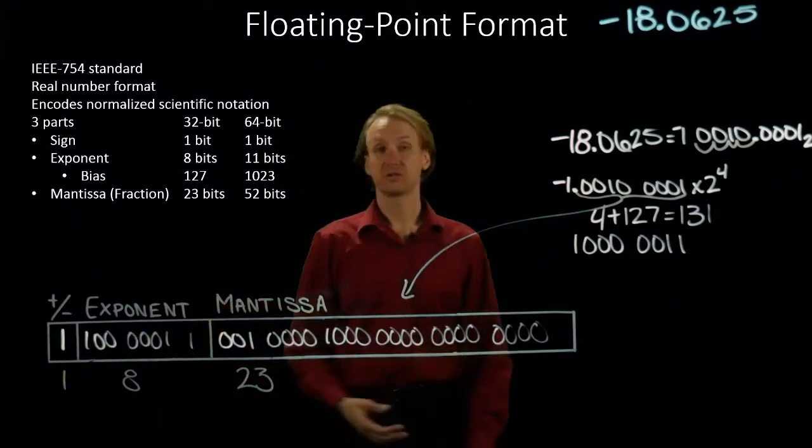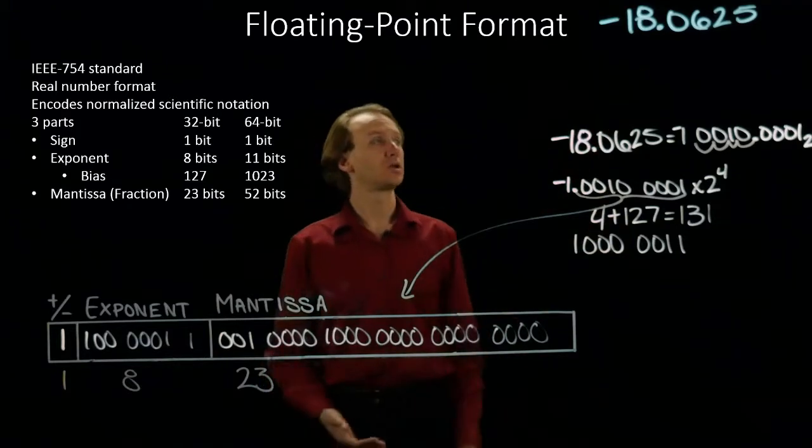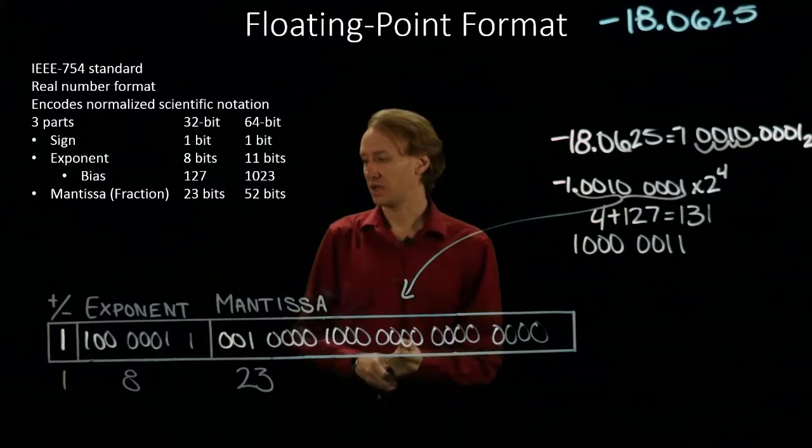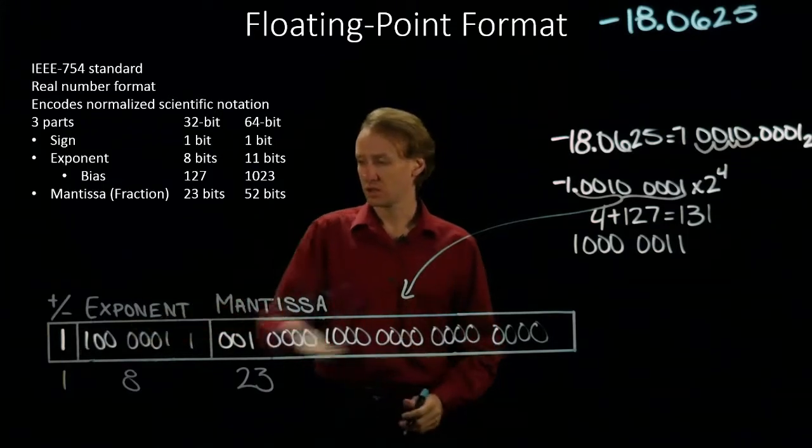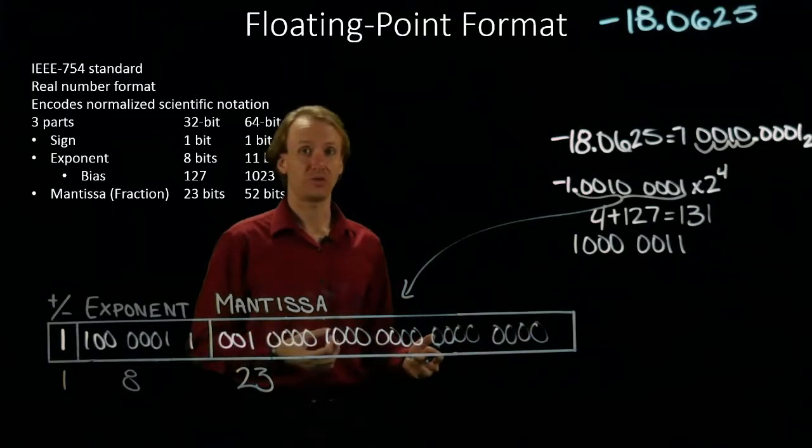So there is the binary version of the floating point representation for negative 18.0625. If I want to represent this as a hexadecimal number instead, I'll look for blocks of 4 and convert those into hexadecimal values.